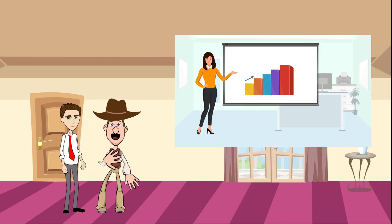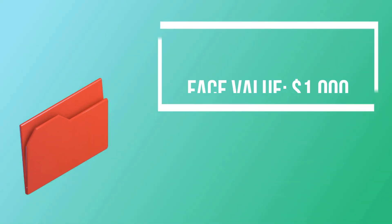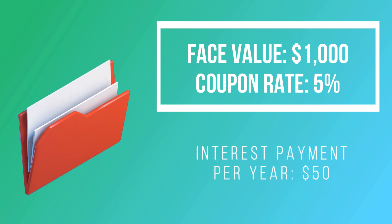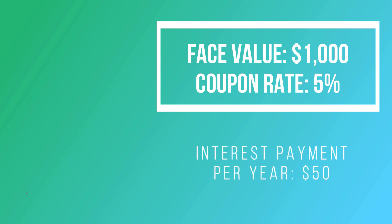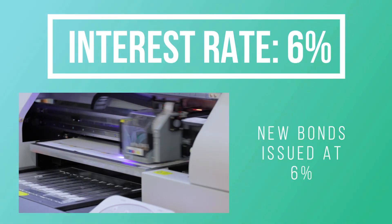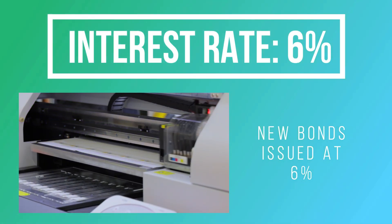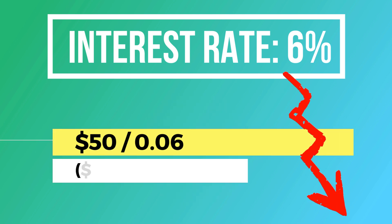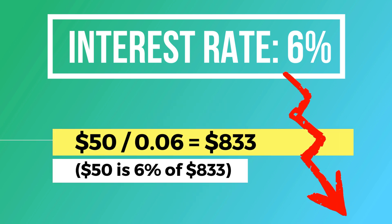Let's say you own a bond with a face value of $1,000 and a coupon rate of 5%. This gives you $50 every year. If the interest rate rises to 6%, new bonds will be issued at a 6% coupon rate, and no one will buy the 5% bonds. The market price will adjust such that the $50 coupon provides an effective yield of 6%, making the bond price $833.